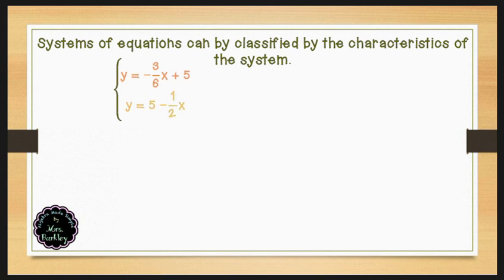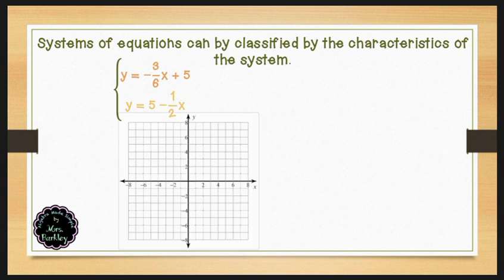Let's look at one more example. If we have the system y equals negative 3/6x plus 5 and y equals 5 minus 1 and a half x, in graphing the first equation we have a slope of negative 3/6 and our y-intercept at (0, 5). For a slope of negative 3/6, we will go down 3 and to the right 6 and draw our line. The second equation has a slope of negative 1/2 and a y-intercept at positive 5.